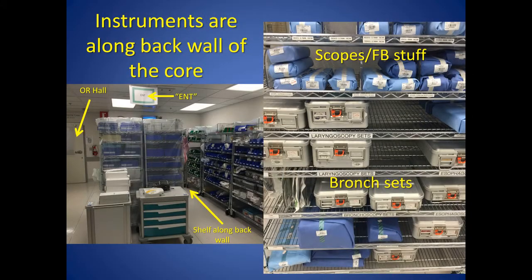To find the instruments, enter the OR core and go to the back wall by ORs 2 and 3. You'll see against the back wall a shelf of foreign body scopes as well as bronchoscopy sets. This is where you'll get the equipment you'll need.